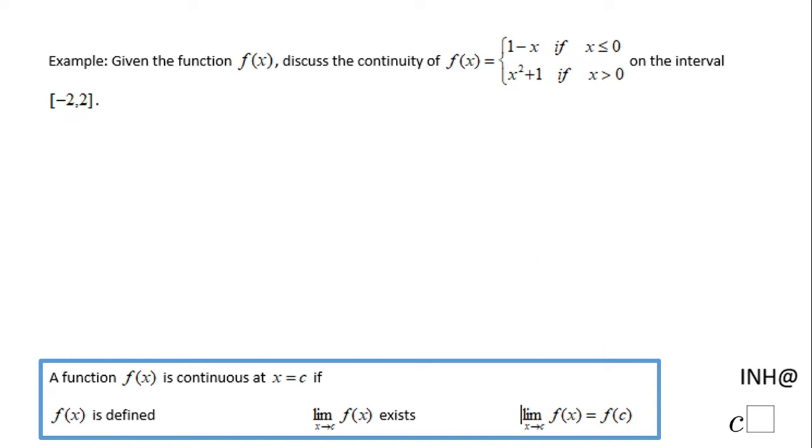Welcome or welcome back to I Need Help at C Squared. In this example, we have a piecewise function: 1 minus x if x is less than or equal to 0, x squared plus 1 if x is greater than 0. We need to see the continuity of this function on this closed interval.